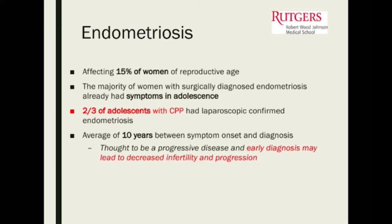Two-thirds of adolescents with chronic pelvic pain actually had laparoscopically confirmed endometriosis. On average, it takes 10 years from symptom onset to diagnosis — imagine how frustrating that is for patients. Endometriosis is really thought to be a progressive disease, and early diagnosis may lead to decreased fertility concerns and slowed progression of the condition.